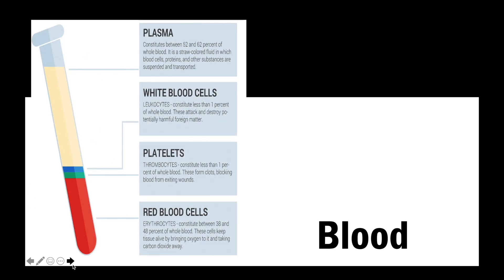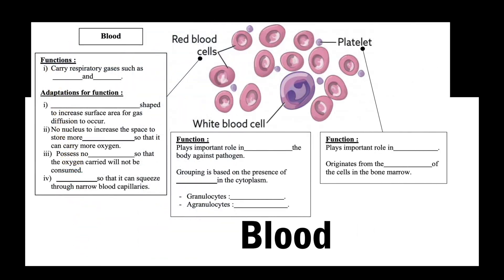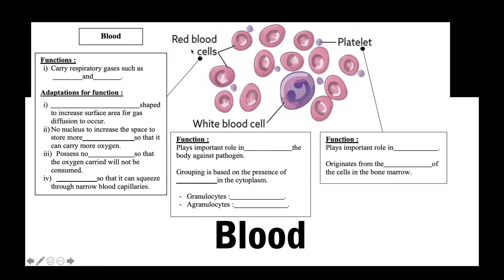The last connective tissue is the blood. In centrifuged blood, 52 to 62% is plasma, of which 91% is water, allowing blood to flow easily. Plasma also contains dissolved proteins, hormones, and gases. White blood cells are suspended above the platelets and red blood cells. Red blood cells, or erythrocytes, carry respiratory gases such as oxygen and carbon dioxide around the body.